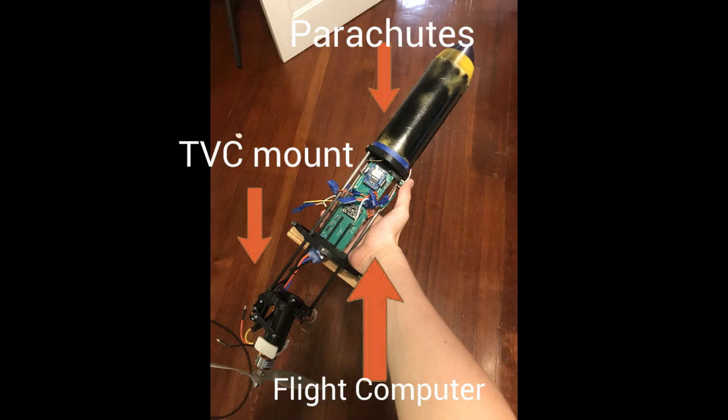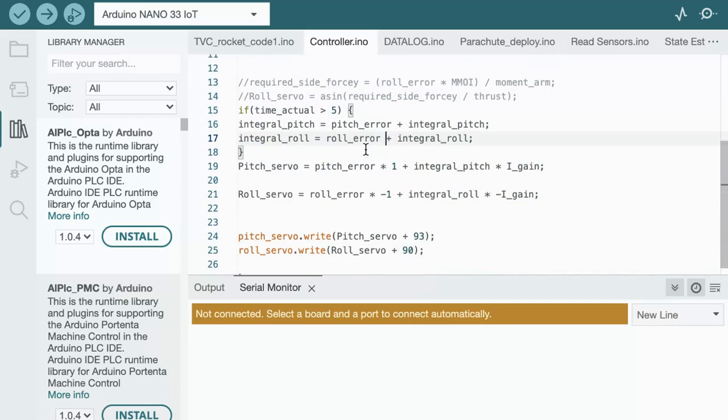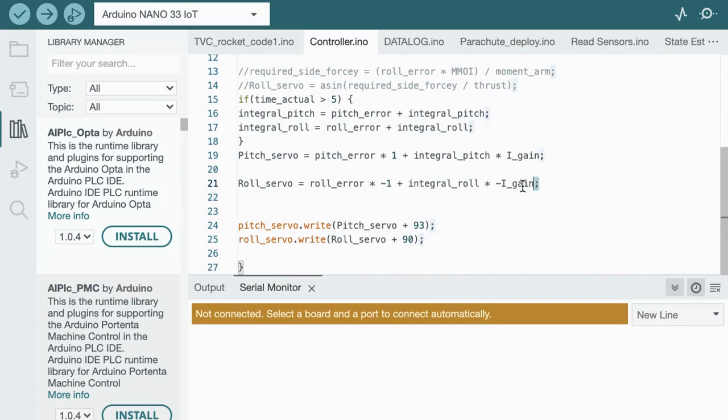Now getting into software, we're using a proportional-integral controller—a PI controller—but I might add a derivative as well to make it a PID. The way I'm testing the controller algorithm is by first making a two-axis gimbal to put the rocket on.